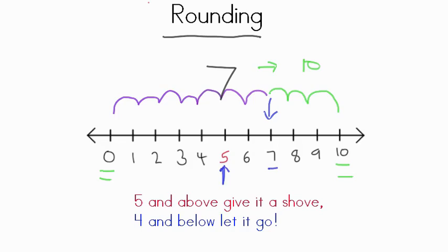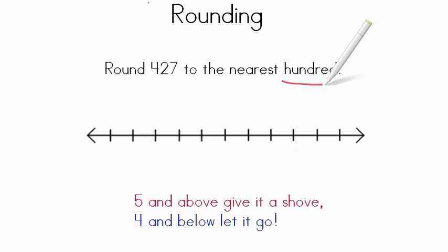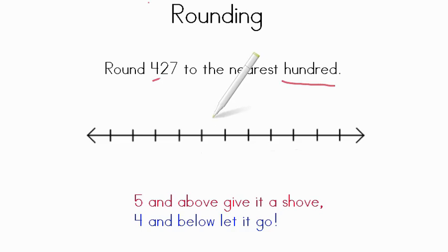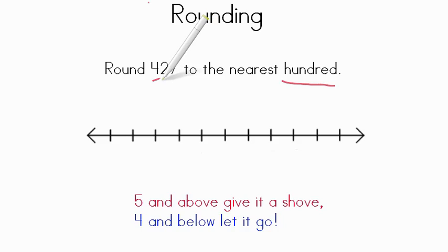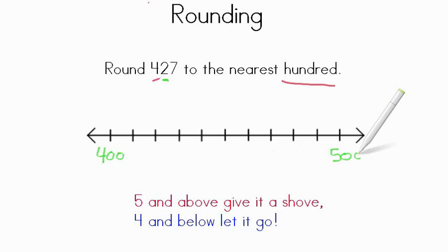Let's try another. Now we have a bigger number this time. It says round 427 to the nearest hundred. Now that's a key part — you need to know whether you're in the ones, the tens, the hundreds, or the thousands. In this case, the hundreds right here says 400. You always have to look at the number to the right to help you figure out where you're going to round. So we have 427, and we have to figure out: are we going to round to 400 or are we going to round to 500?